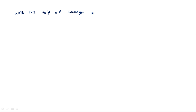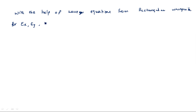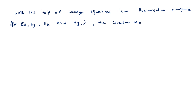With the help of wave equations from the rectangular waveguide for Ex, Ey, Hx, and Hy, these four equations are going to be converted. So from the rectangular waveguide equations, the circular waveguide field equations are going to be derived — that is for Er, Eφ, Hr, and Hφ.